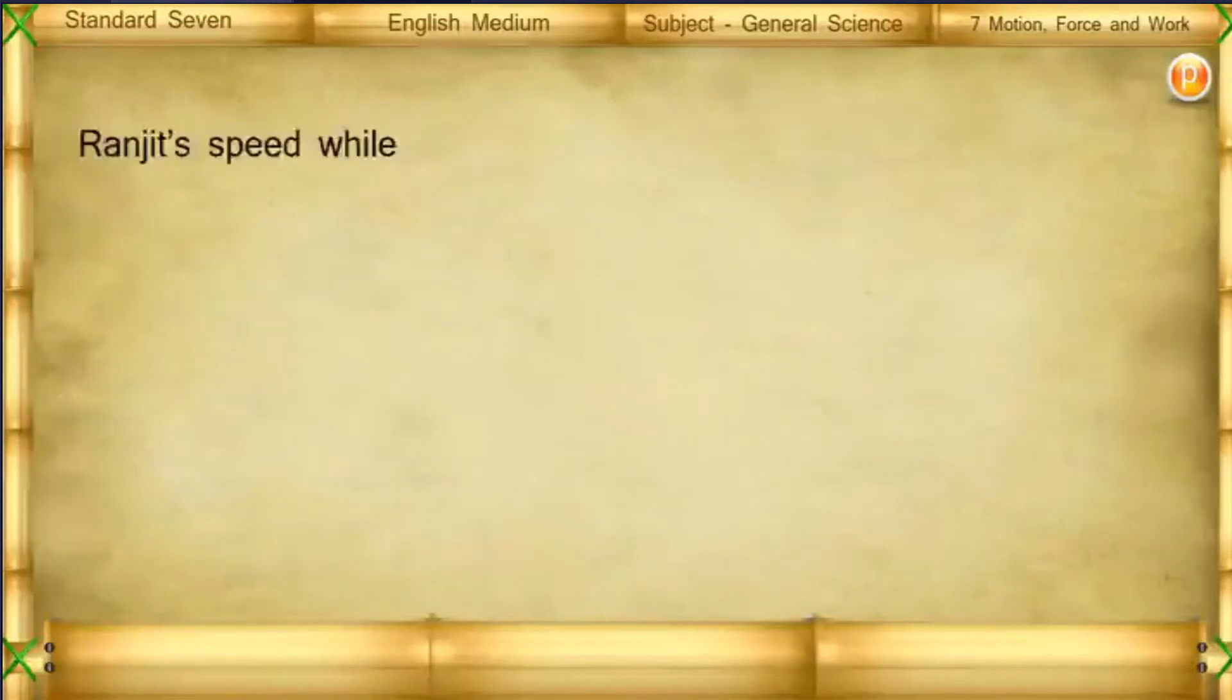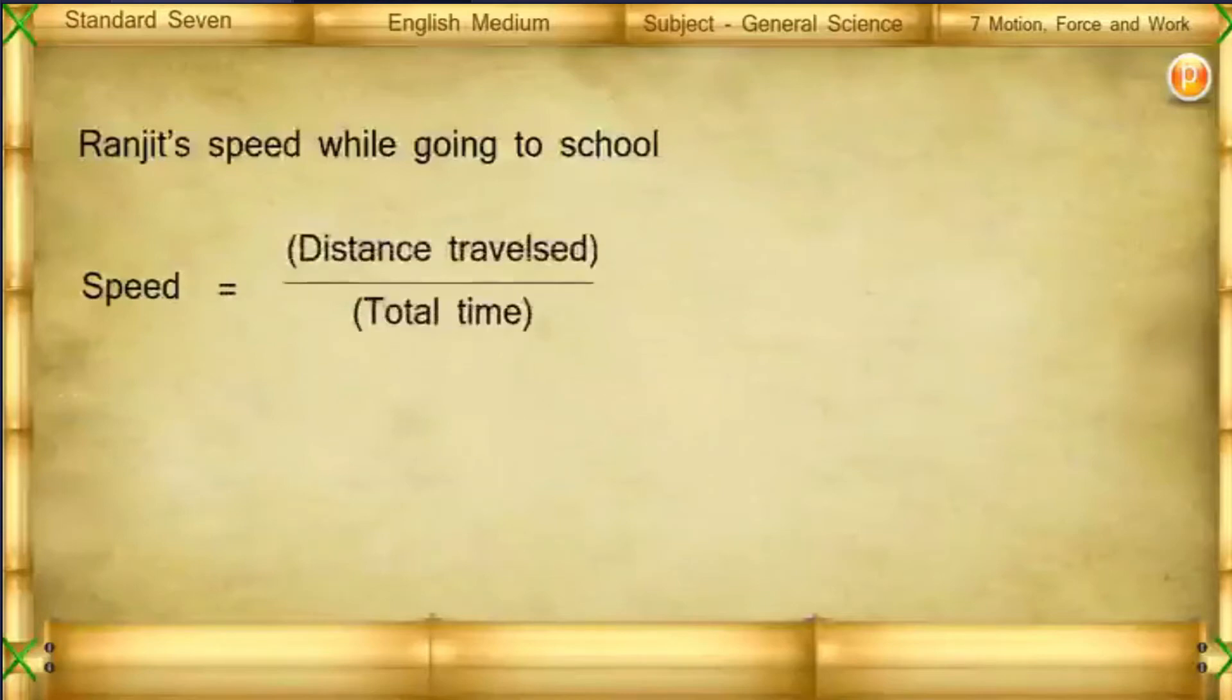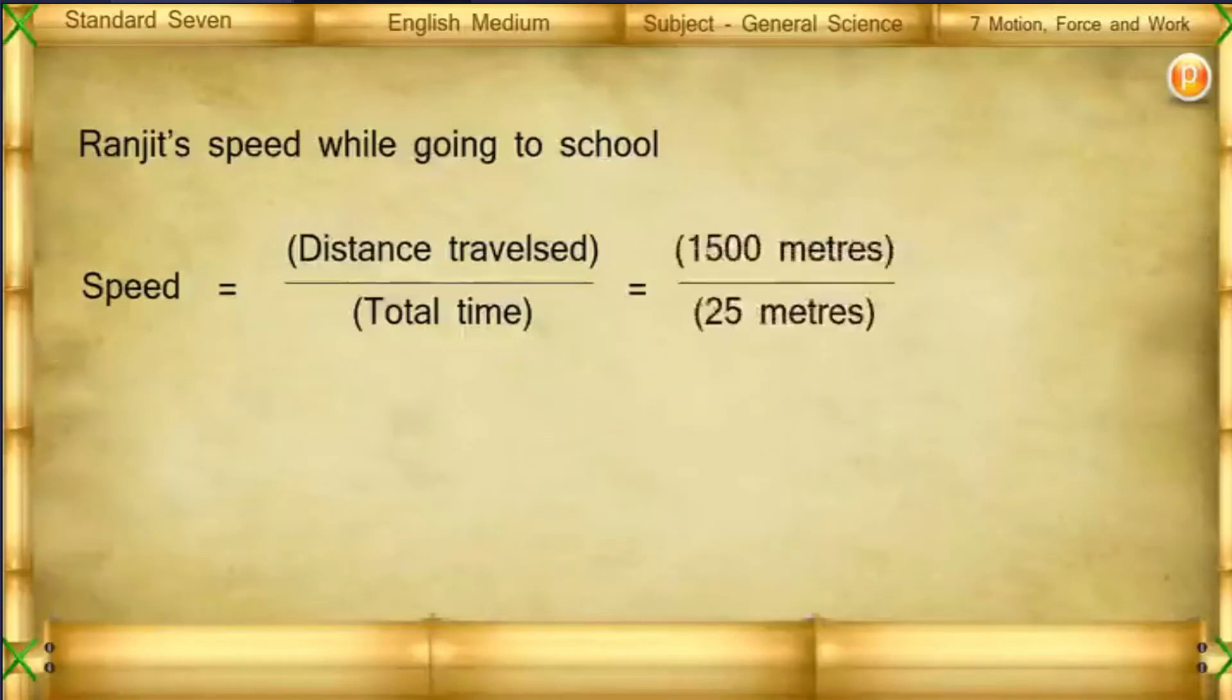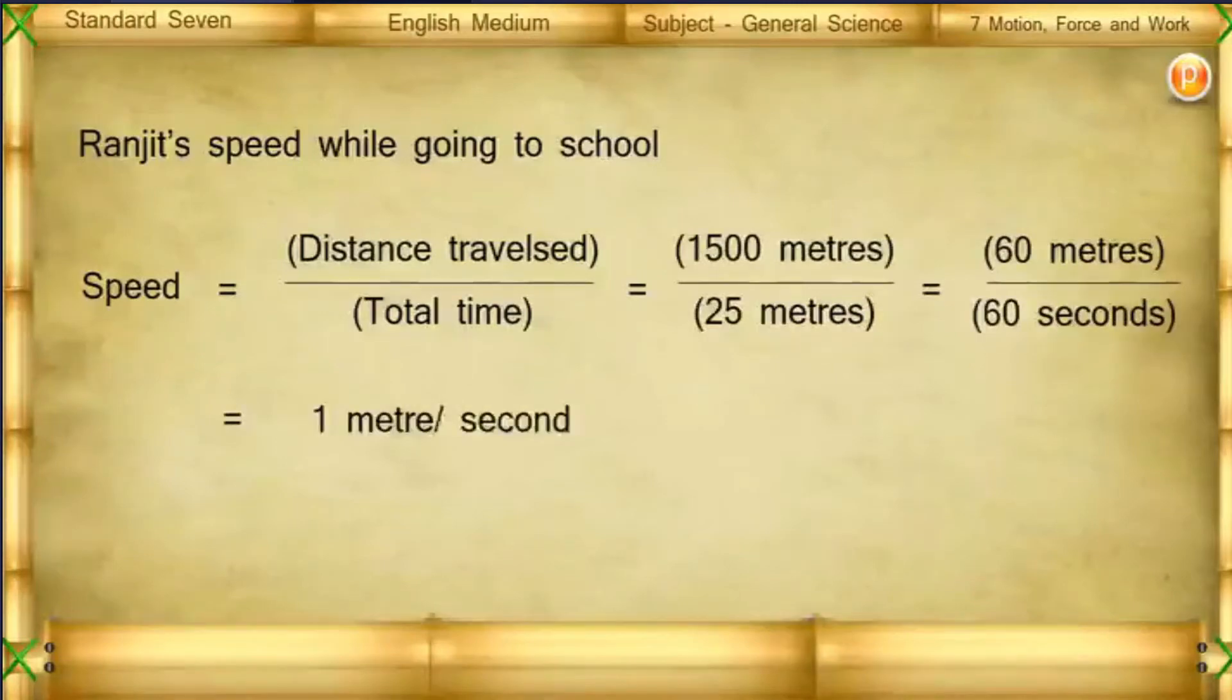Ranjit's speed while going to school: speed equals distance traversed upon total time equals 1500 meters upon 25 minutes equals 60 meters upon 60 seconds equals 1 meter per second.